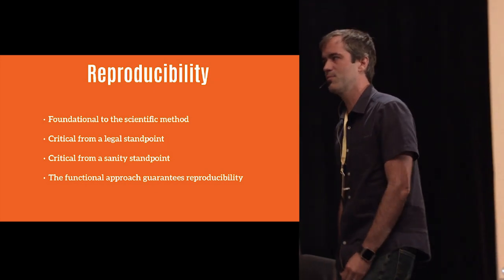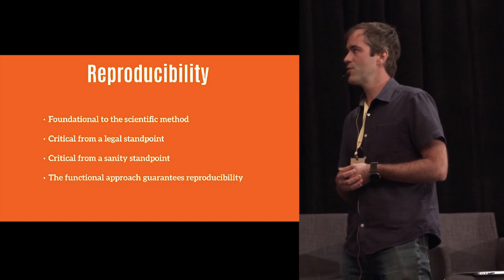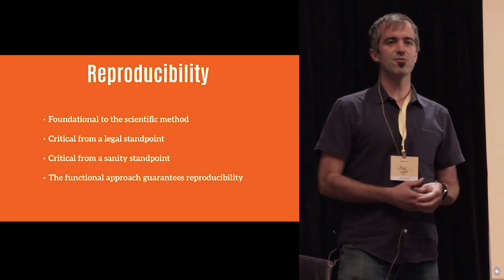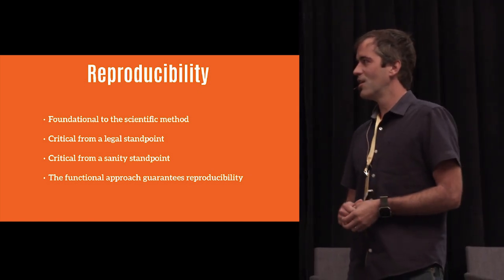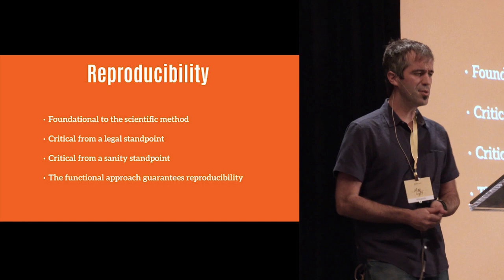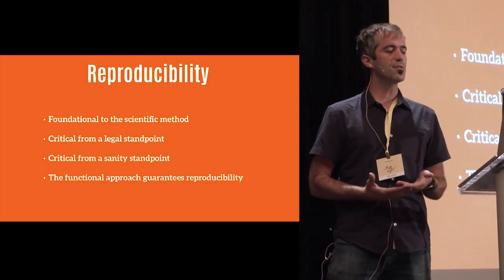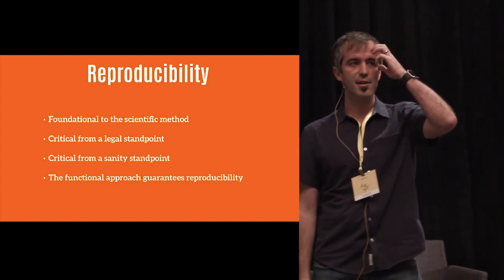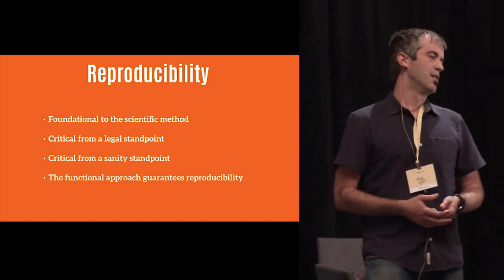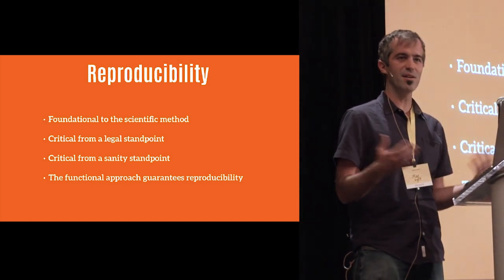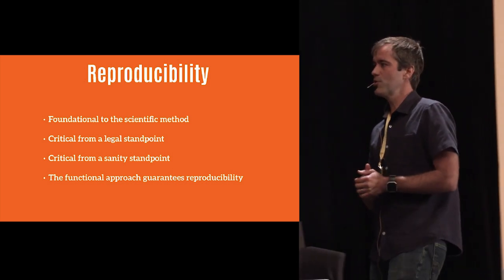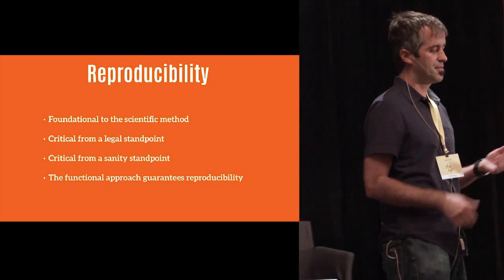One of the core motives for this functional data engineering methodology is reproducibility. Reproducibility is foundational to the scientific method — if you make great claims, your peers need to be able to reproduce your results. It's also critical from a legal standpoint. And if you're a data engineer running the same job today as yesterday and getting different results, you'll probably go a little insane over time. This functional approach is all about reproducibility and sanity.